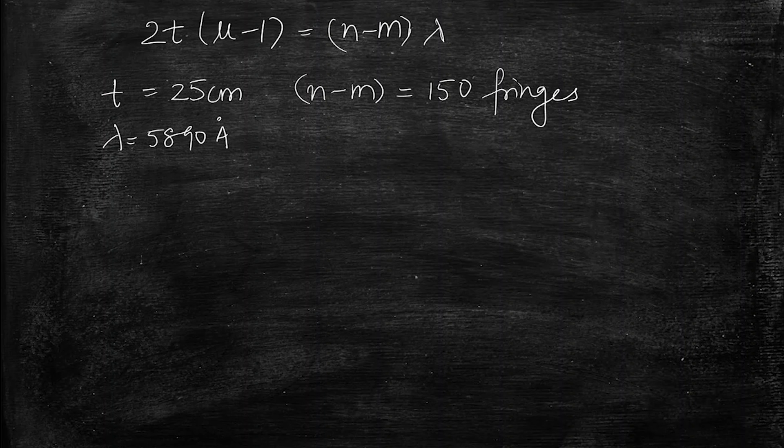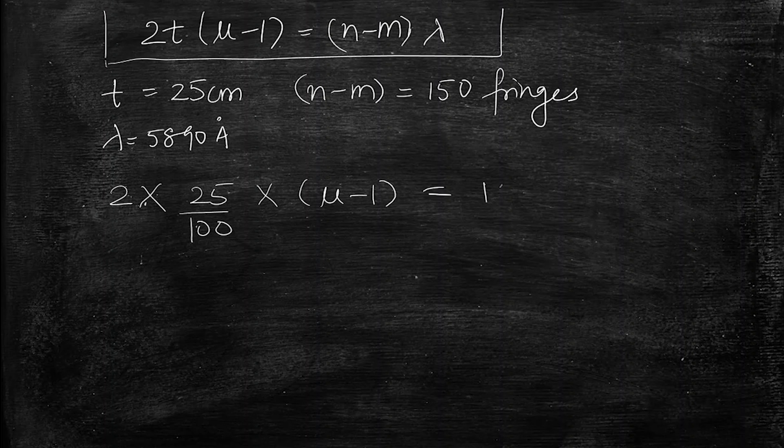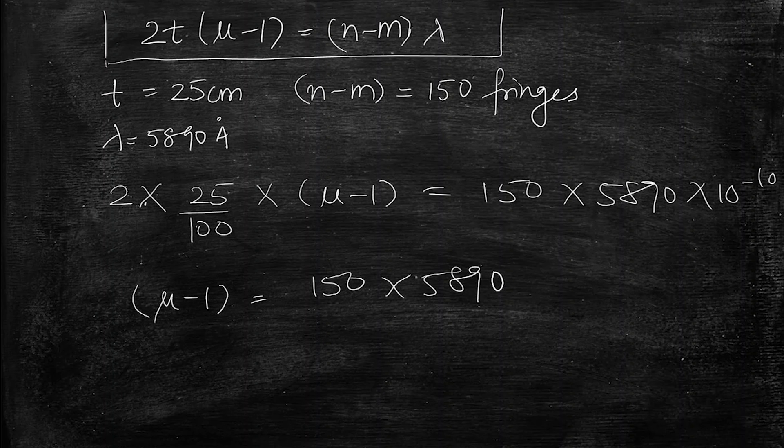So we just have to put all these values into the formula. So this is twice into 25 cm, so we will divide by 100 to convert it into meter. So this is mu minus 1, this is 150, and this is 5890 angstrom. So mu minus 1 will be equal to 150 into 5890 into 10 to minus 10, this is 2 into 0.25.